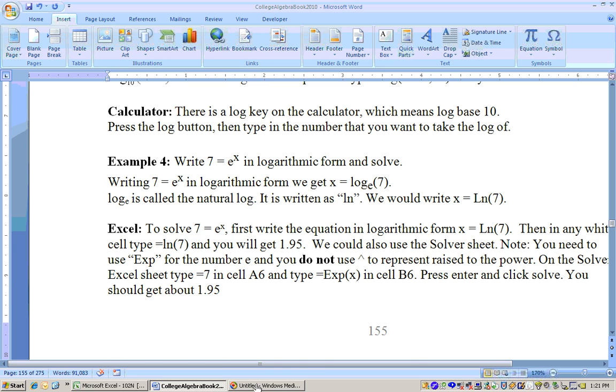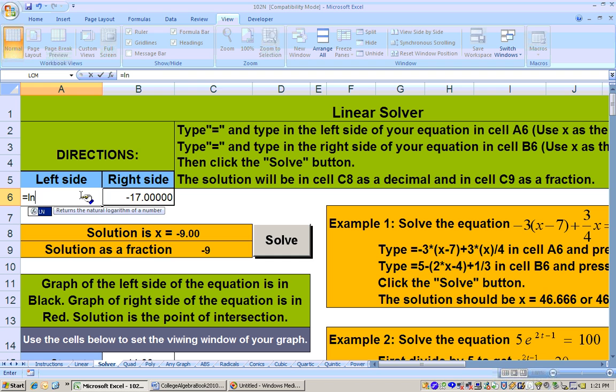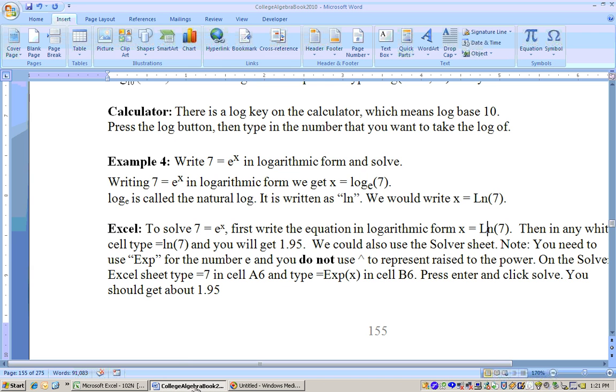How could we get the natural log of 7? Well, just on any sheet, I'll just type in equals ln of 7, close parentheses, and hit enter. And I get 1.9. That's how you can get logs.